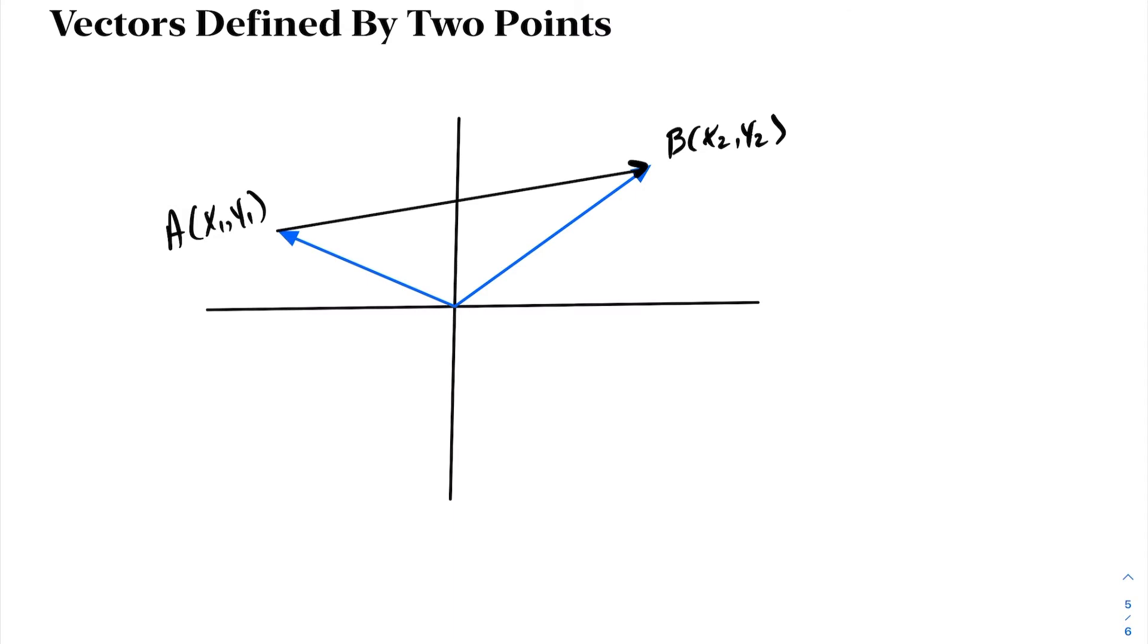By definition of addition of vectors, this vector here would be vector OA, this is our origin, and this vector here would be vector OB. This vector is going to be the vector such that OA plus this vector come out to be OB. The only way for that to happen is this vector would have to be OB minus vector OA. By adding these two vectors, OA plus OB minus OA, vector OA and OA will cancel, and you get your resultant vector OB. Therefore, vector AB equals OB minus OA.